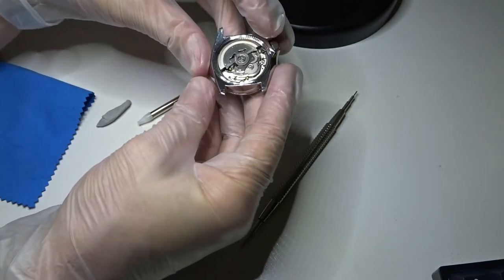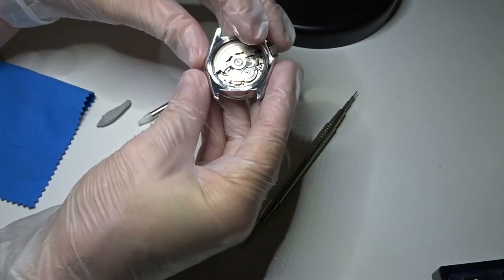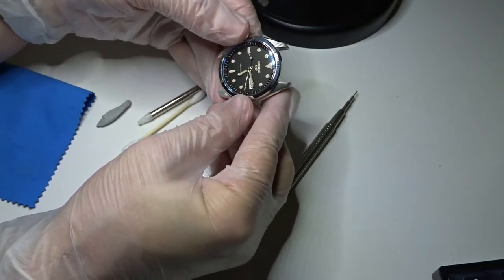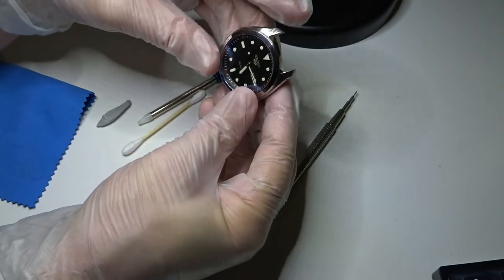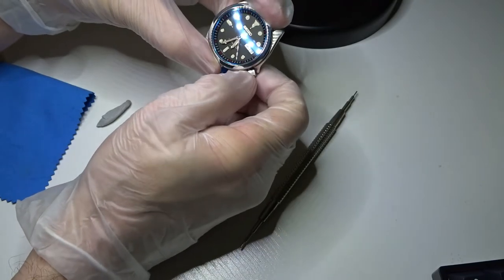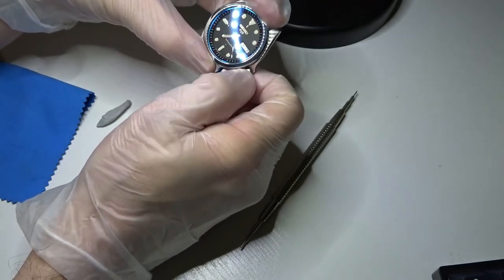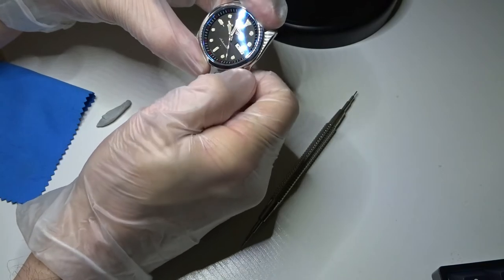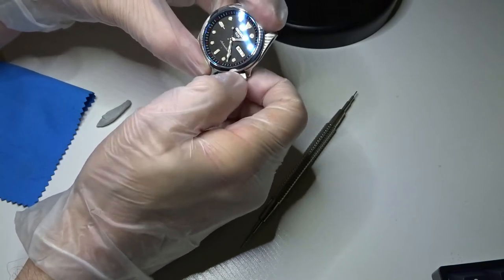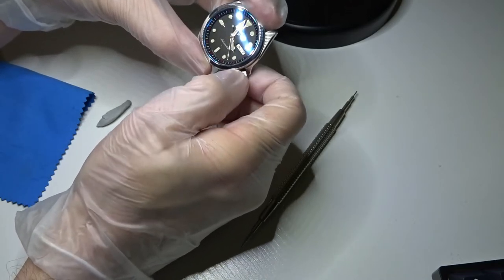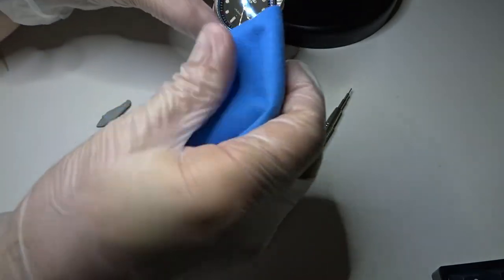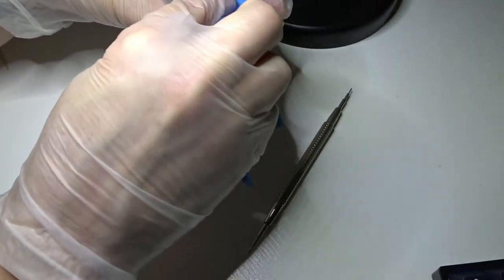So put the stem back in and just checking the movement here. Checking the hands that they are clearing each other, not getting caught up on anything. Also checking that the date turns over, which I already did but just being paranoid I guess.